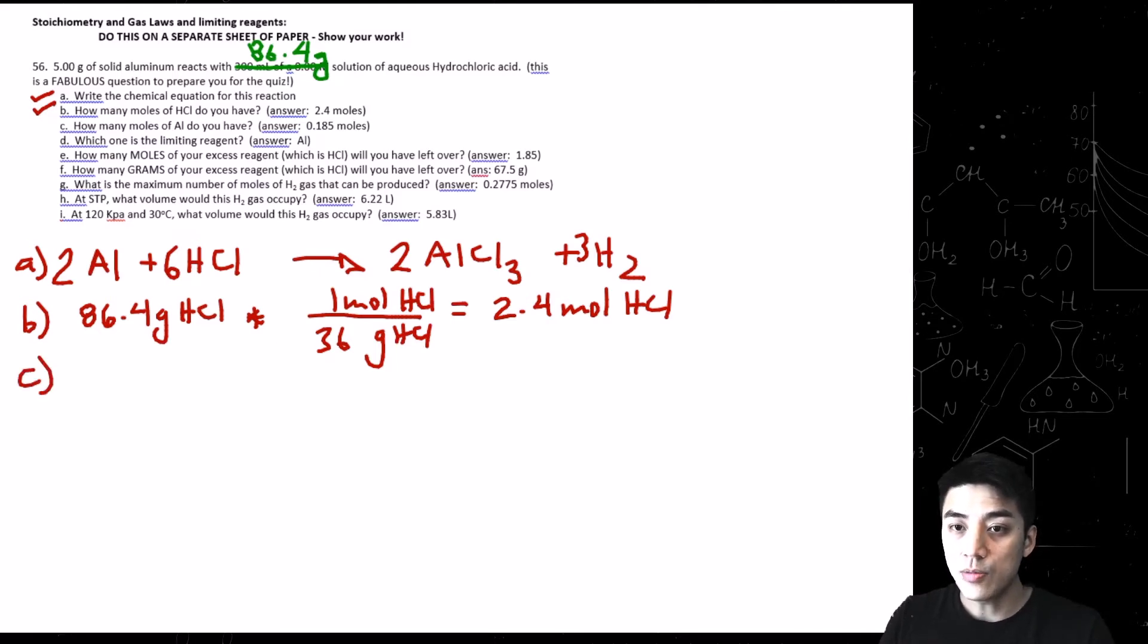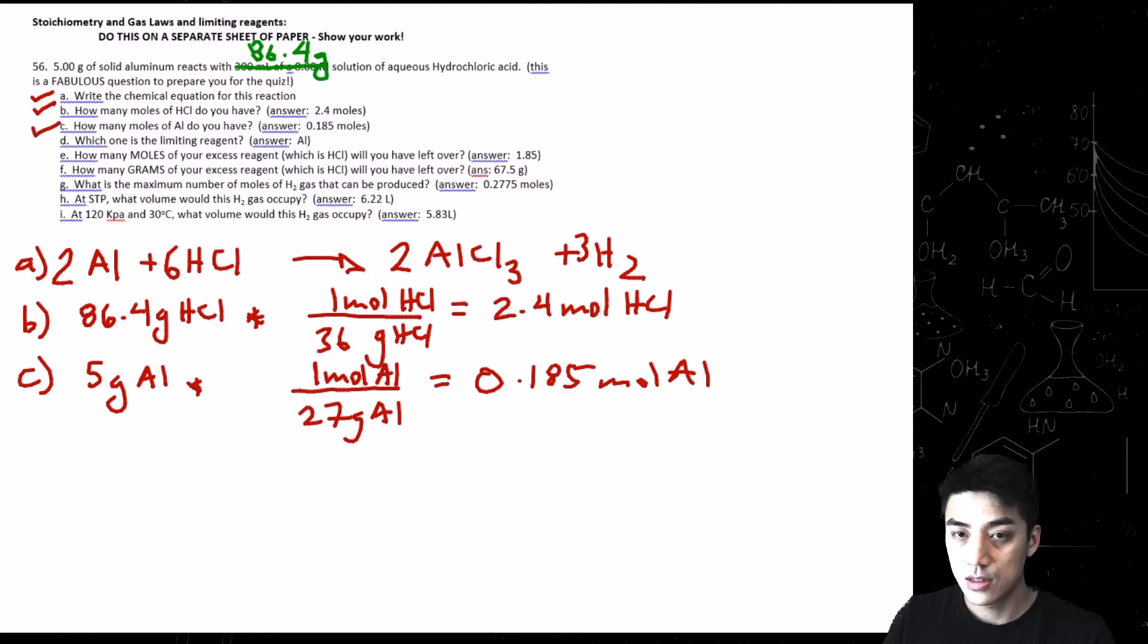Letter C. How many moles of Al do you have? Start with 5 grams of Al, times sign, draw a line. And because you want grams to cancel, you're going to divide by the molar mass, which is 27. Look on the periodic table. It's going to tell you what the mass is. And we've got 0.185 moles of Al. So far, so good. Check letter C off. Let's move on.